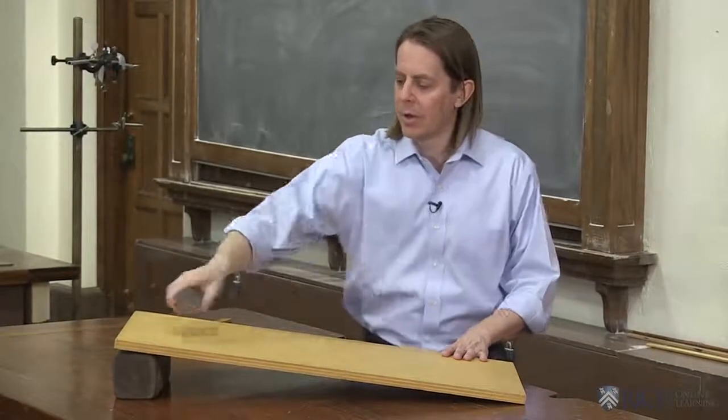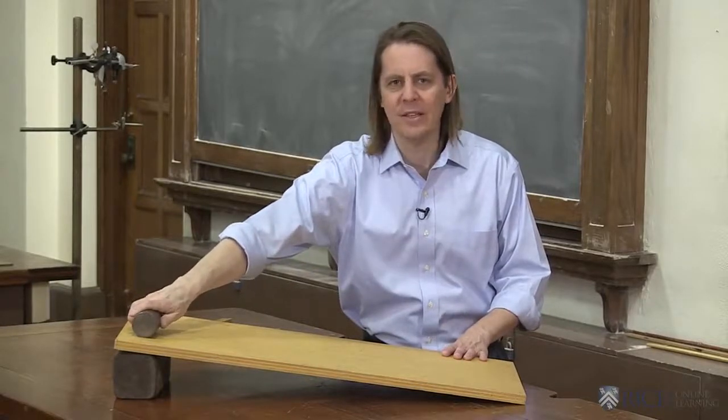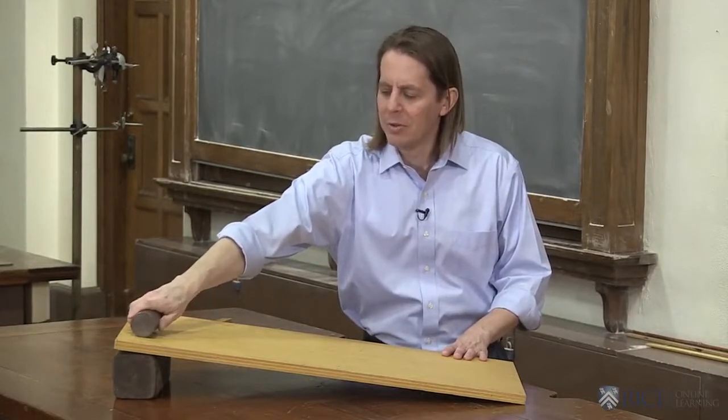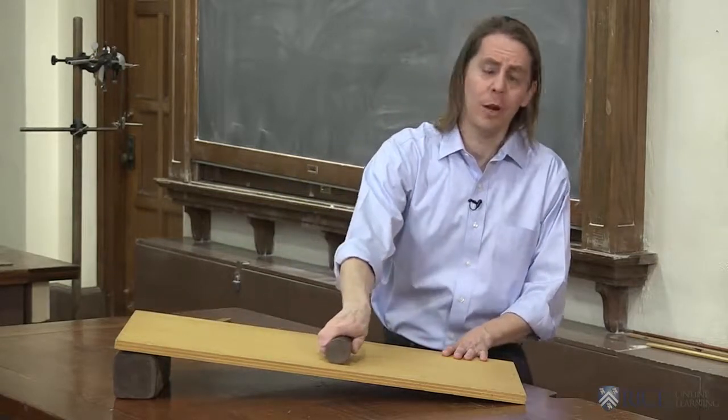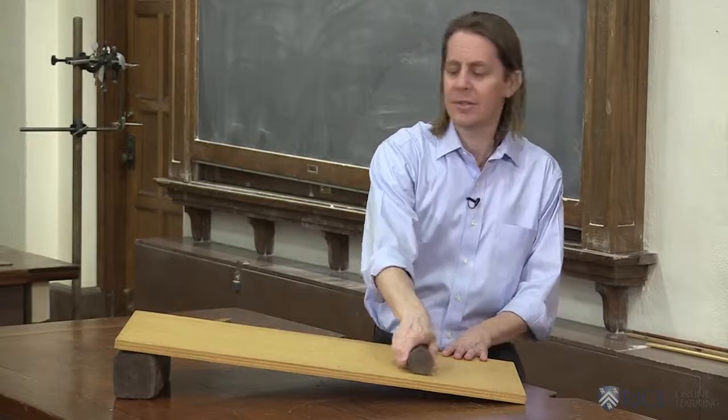So here I have my cylinder. I'm going to put it on the ramp and now let's imagine the ramp has no friction. It's an icy slick ramp. What's this going to do? It's just going to slide. It's not going to rotate. Why would it rotate?